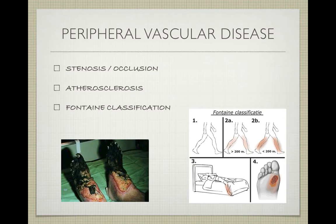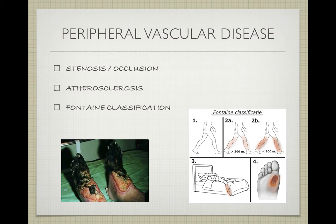This is often caused by atherosclerosis of the lower extremities, which can result from risk factors like smoking, increasing age, diabetes, and hypertension. Besides atherosclerosis, thromboembolic processes, vasculitis, and compression of the limb can also cause stenosis and occlusion. The more severe the stenosis or occlusion, the less blood reaches the extremities and the more symptoms the patient has. The severity of these symptoms can be classified using the Fontaine classification.